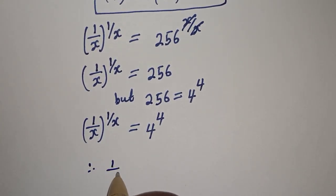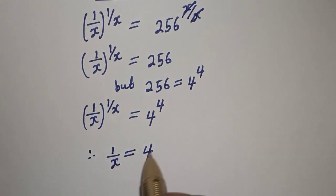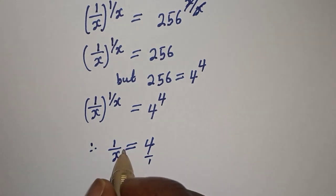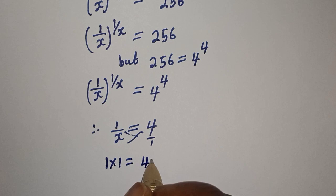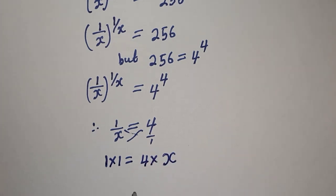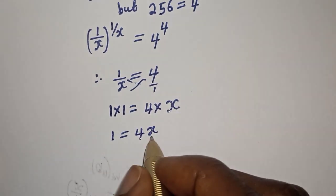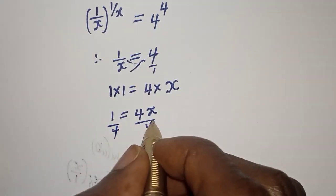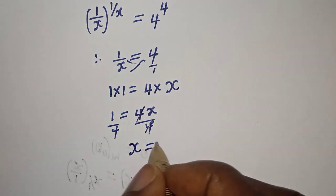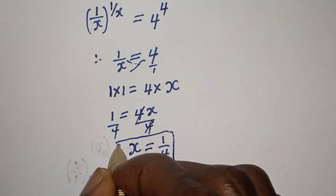Therefore, 1 over s is equal to 4. But we are looking for the value of s. This is also over 1, so let's cross multiply. 1 times 1 is equal to 4 multiplied by s, then 1 is equal to 4s. Dividing both sides by 4, s is equal to 1 over 4. And this is the final answer.